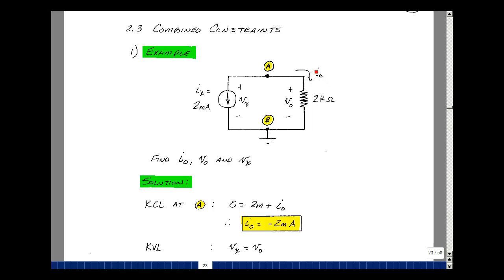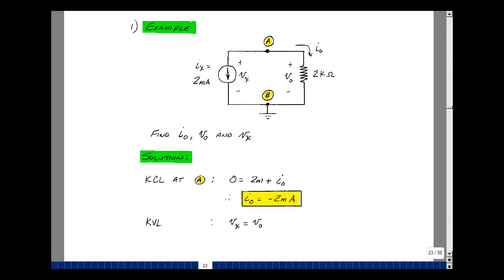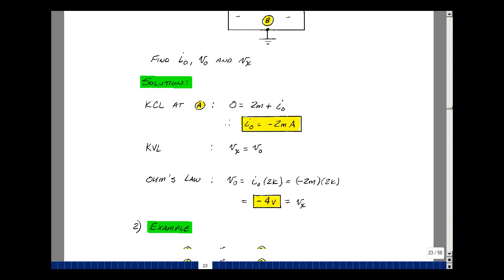But I do know the current in this resistance is minus 2 milliamps, so I could find the voltage V0 by Ohm's Law. So V0 then is equal to I0 times 2k, but I0 is a minus 2 milliamps, so I get minus 4 volts. And therefore, V sub x is minus 4 volts. And you can find these equations here below.